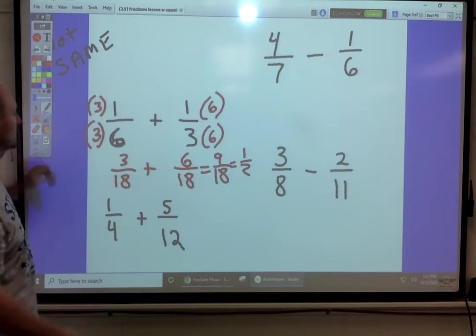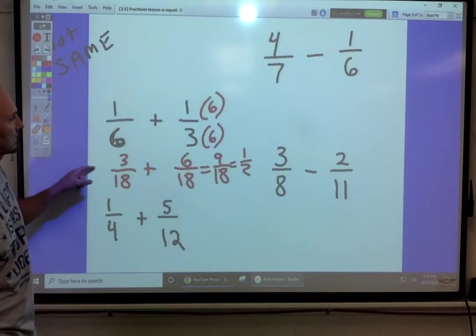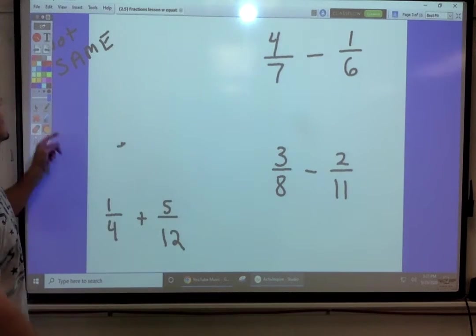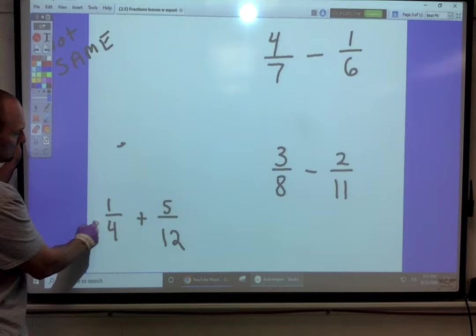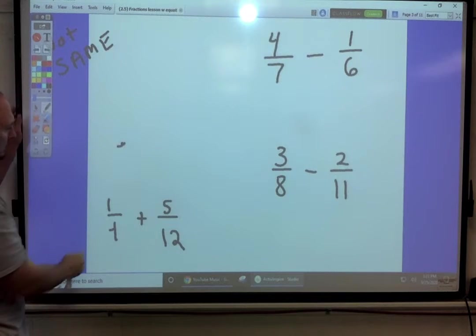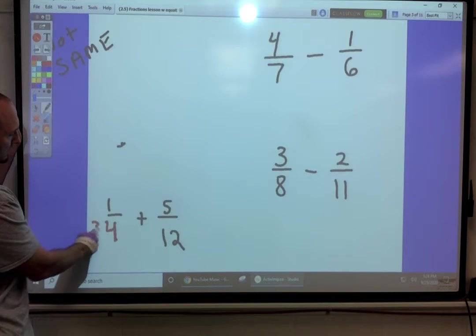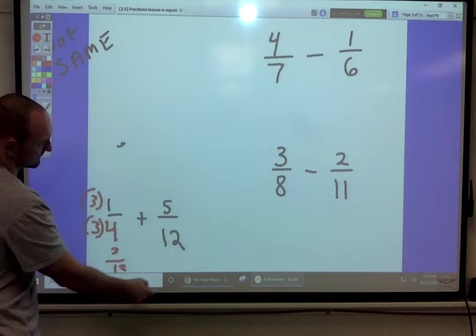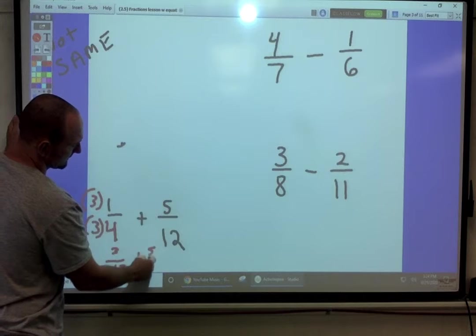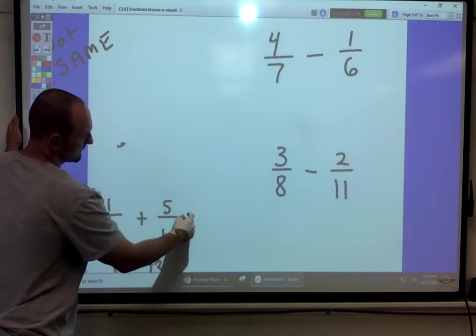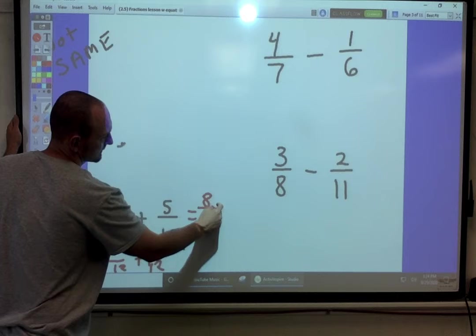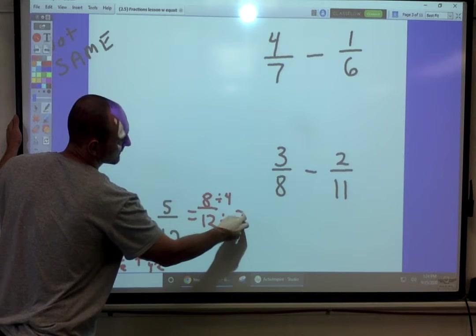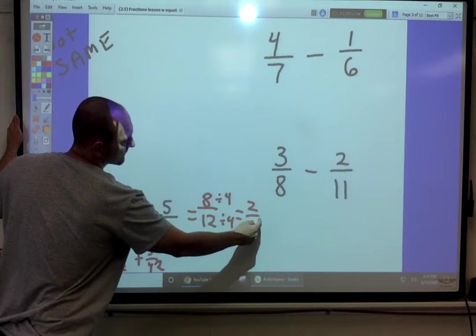If you want to try these ahead of me, go ahead. I'm not going to do an explanation. I'm just going to work it out. Let's get that. Times this by three. Three-twelfths plus five-twelfths is eight-twelfths, divided by four, divided by four, two-thirds.